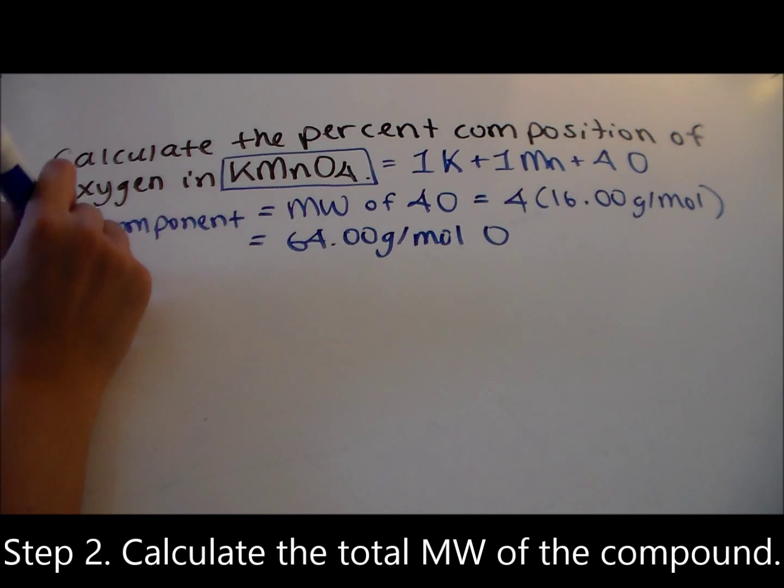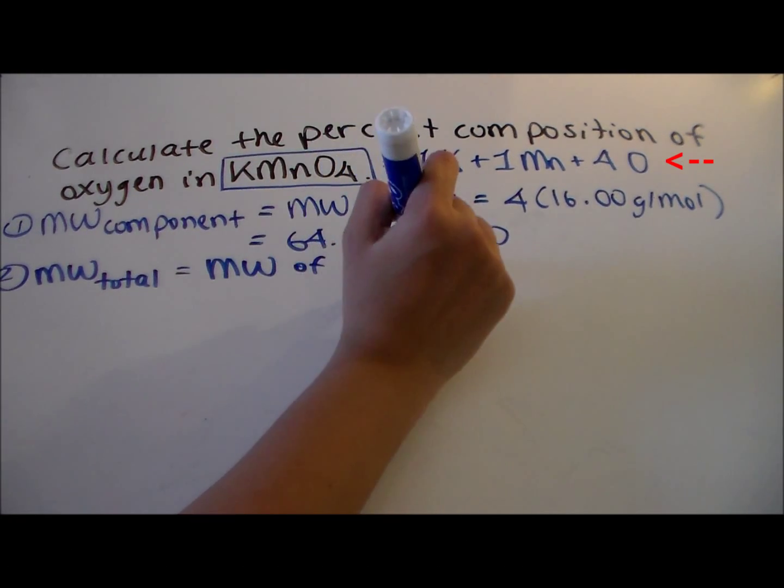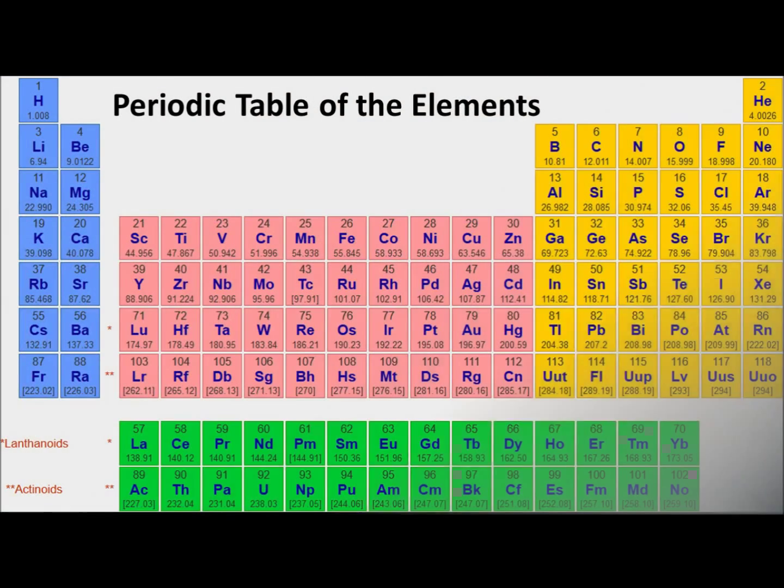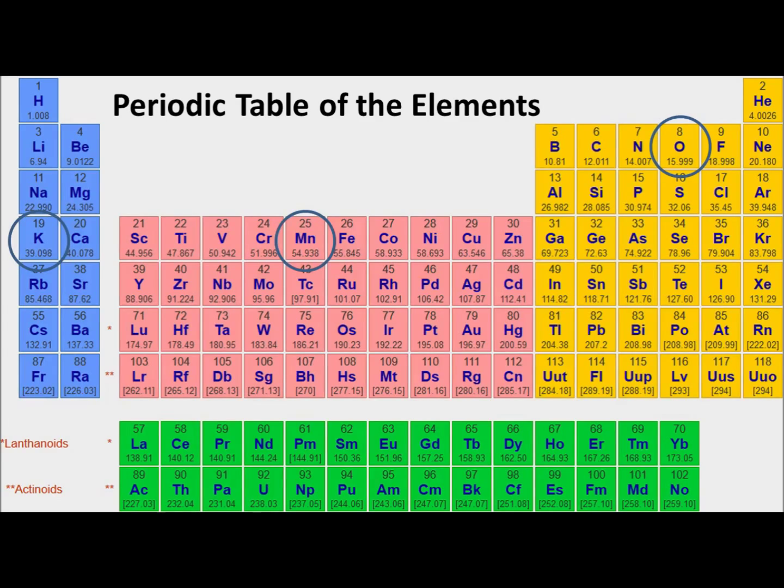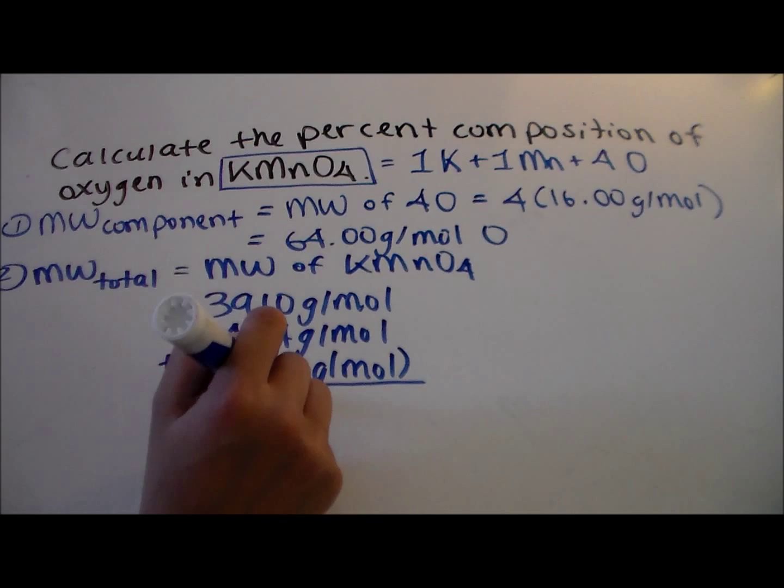The second step is to calculate the total molecular weight of the compound. In KMnO4, there is one potassium, one manganese, and four oxygens. Given the atomic masses rounded to two decimal places on the periodic table for potassium, manganese, and oxygen, KMnO4 has a total molecular weight of 158.04 grams per mole.